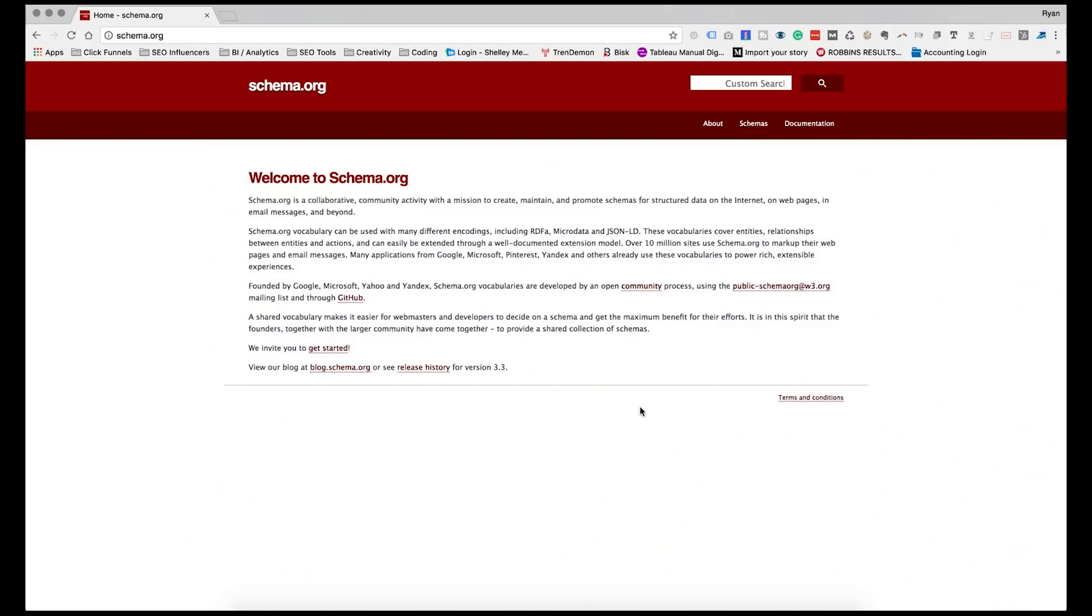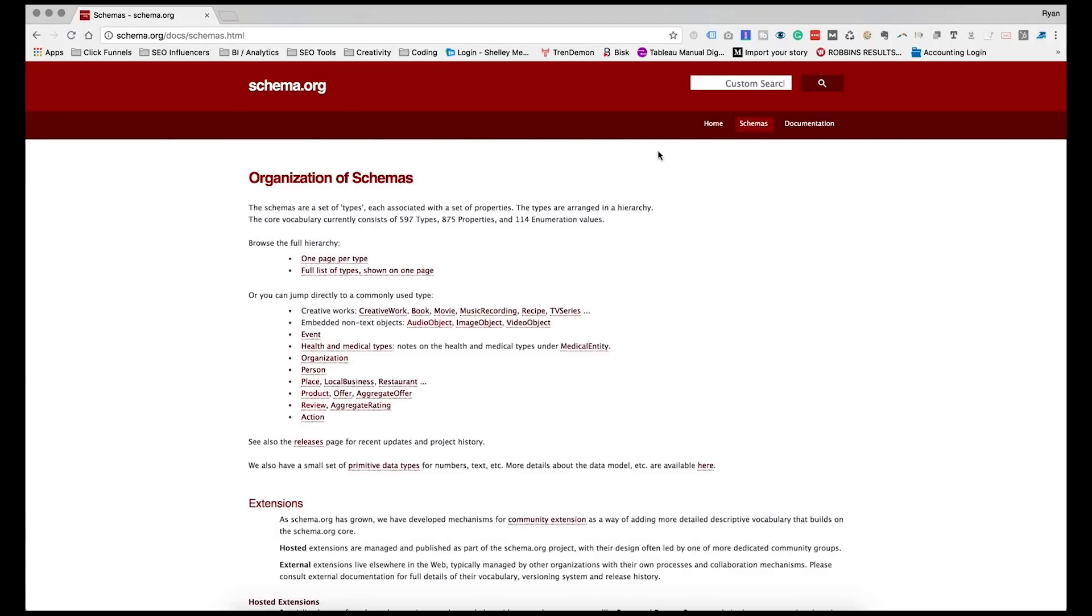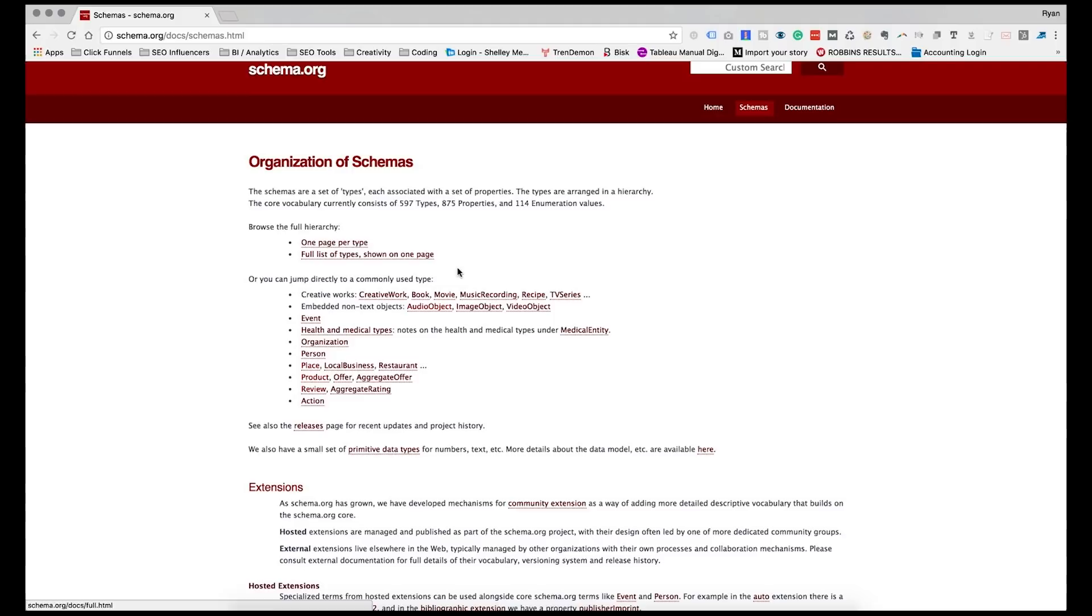All right. So this is schema.org. It is a site that is founded by Google, Microsoft, Yahoo, Yandex, and the schema.org vocabularies are developed by an open community process. So this is really an open source project where people are working together in order to have a standardized language for structured data. Now, if we look here at the schemas, you're going to see that there's a number of different types of schemas. So we can browse the full hierarchy or we can jump down to the most commonly used types of schema, like creative works. So this would be like a book or a movie or a piece of music, things of that nature. Maybe it's a video or an image object or an event, or they've got stuff for medical, organizations, persons, places, location, business, products, reviews. So these are the most common uses of schema, probably where you'll find yourself using schema the most often.